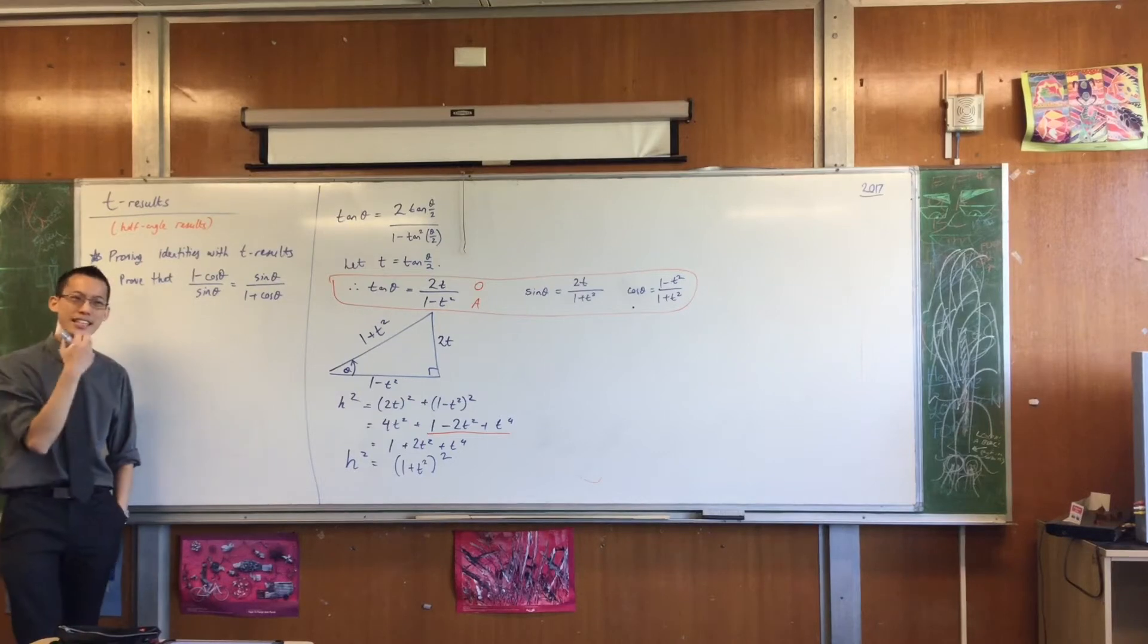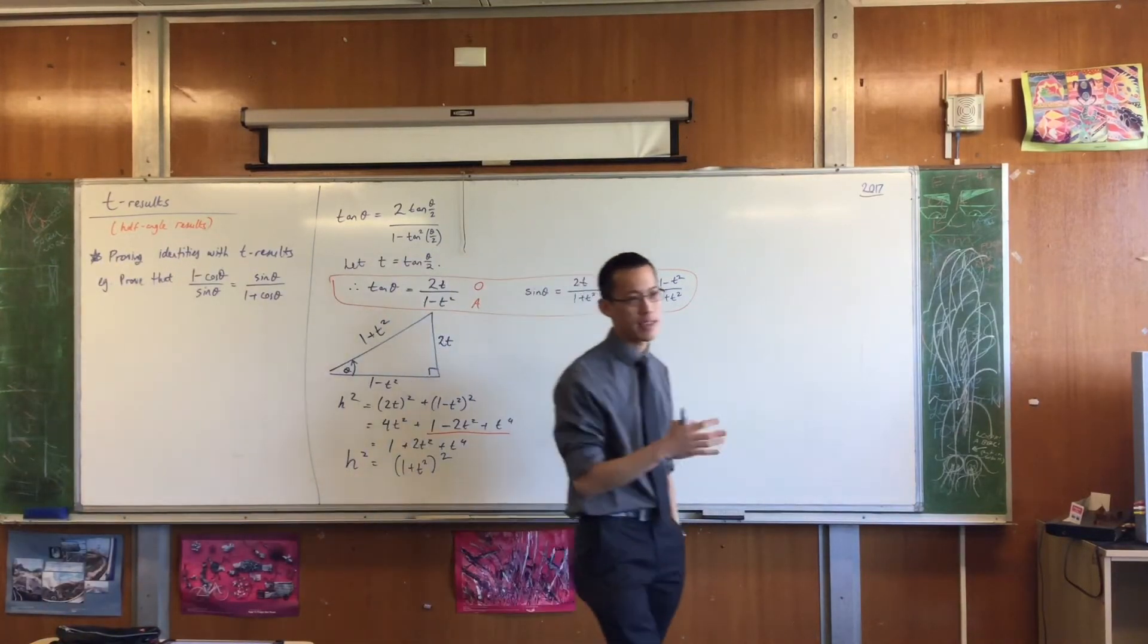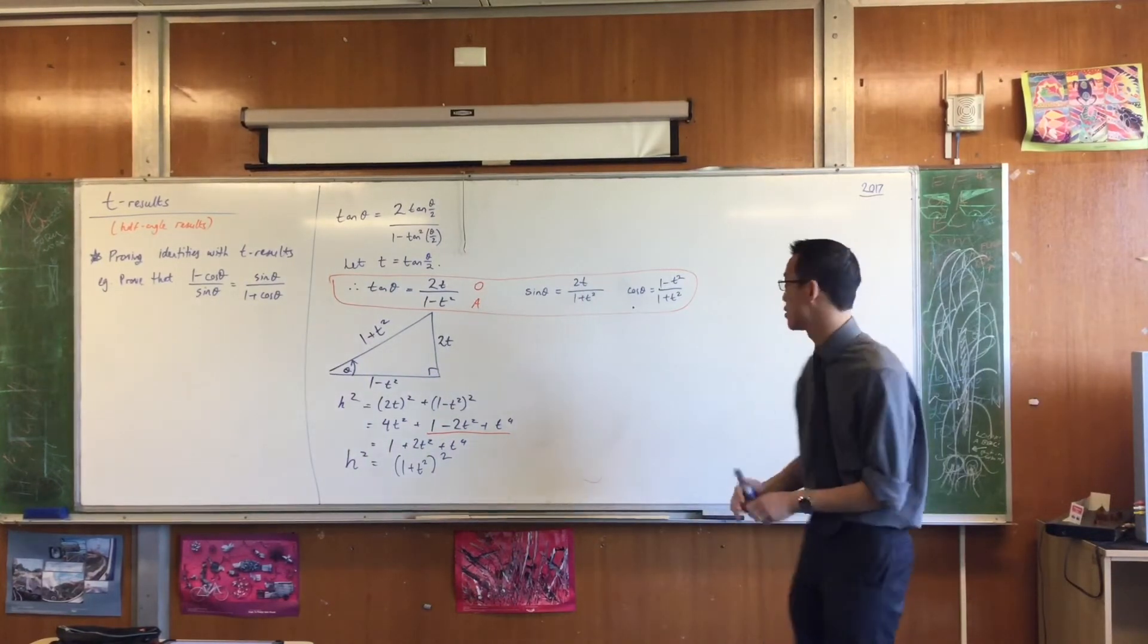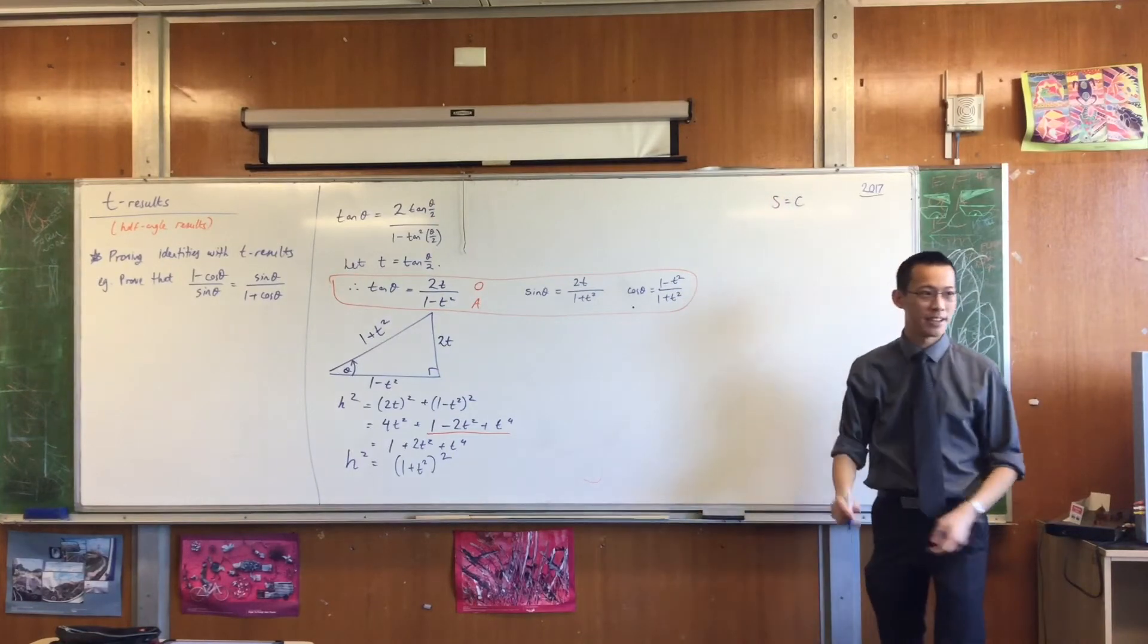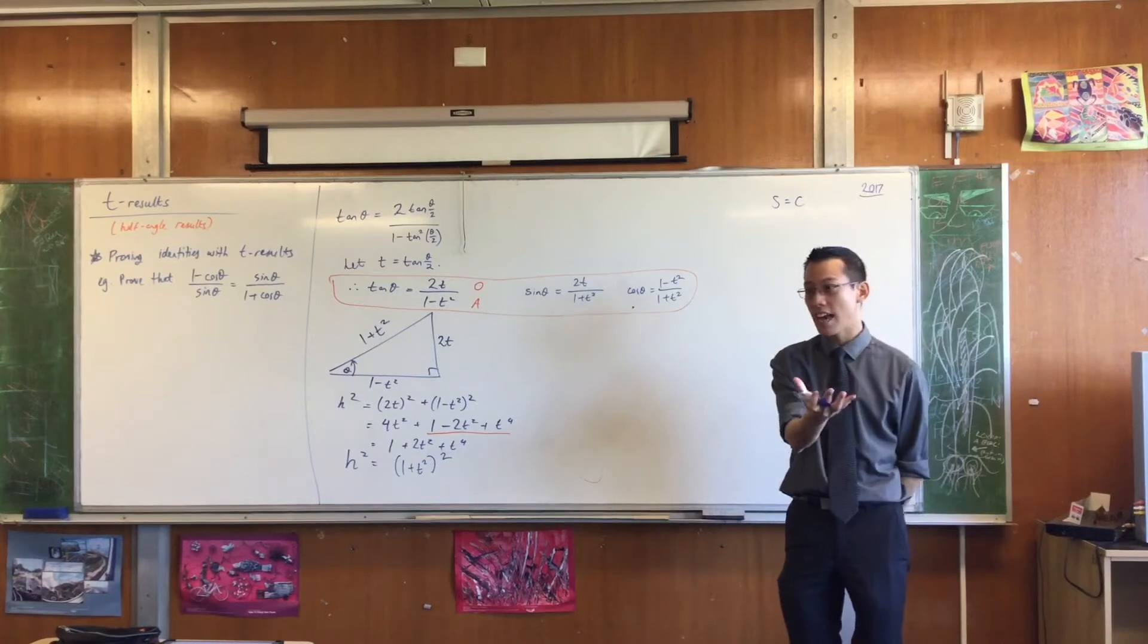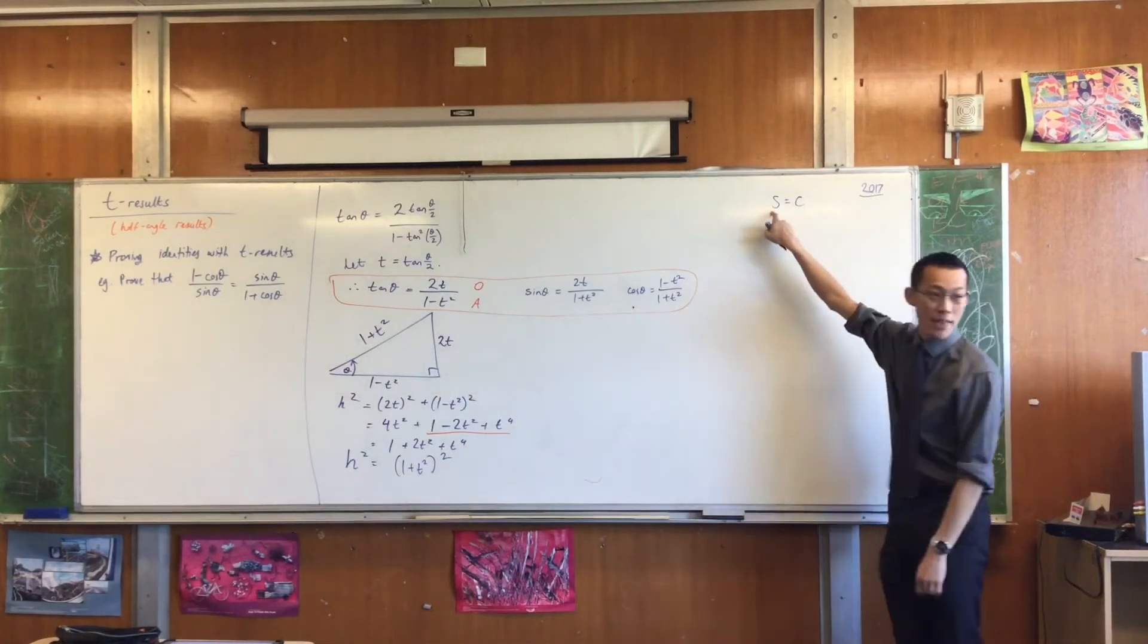Do you remember when we did trig identities before, I told you that broadly speaking there were three different categories of trig identity proofs. The first was simple equals complicated, right? That's easy. You start with the complicated side and work on it until you make it simple. And then you say, cool, I'm there, I'm done.